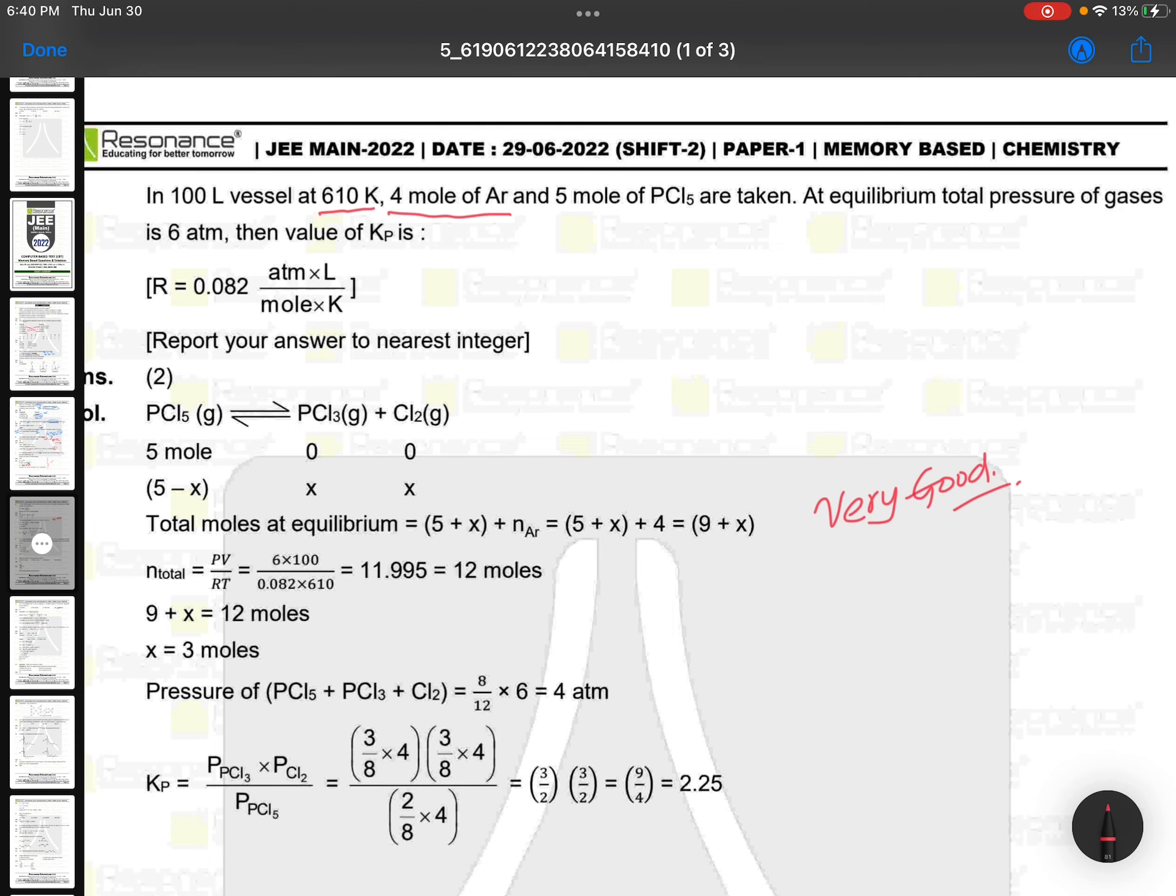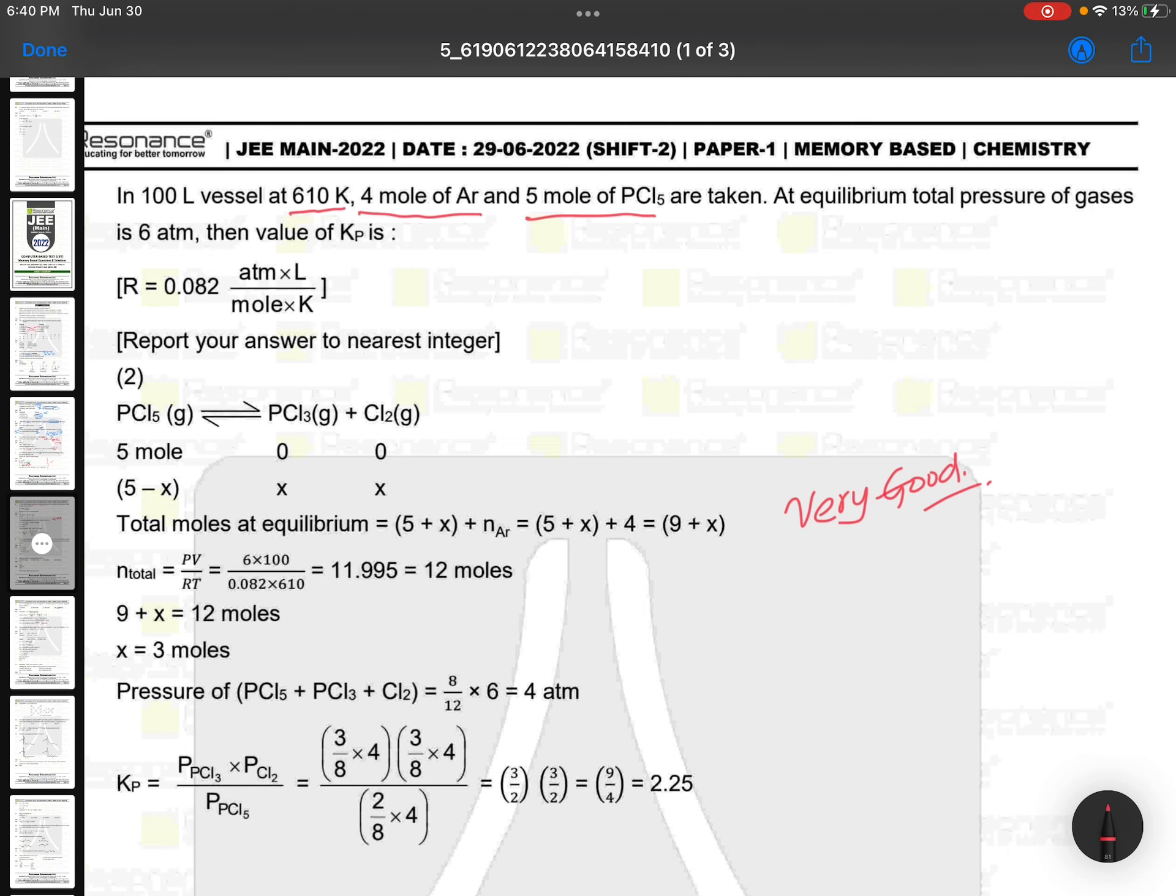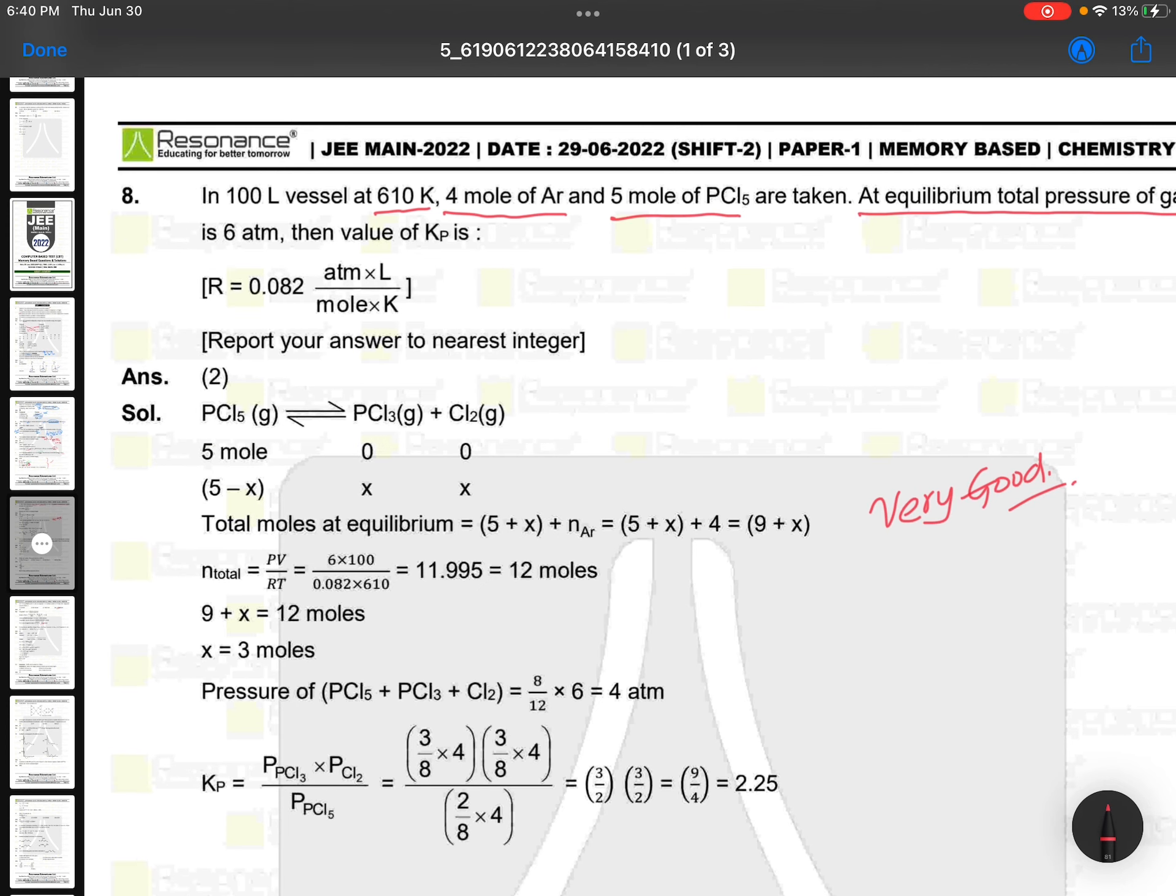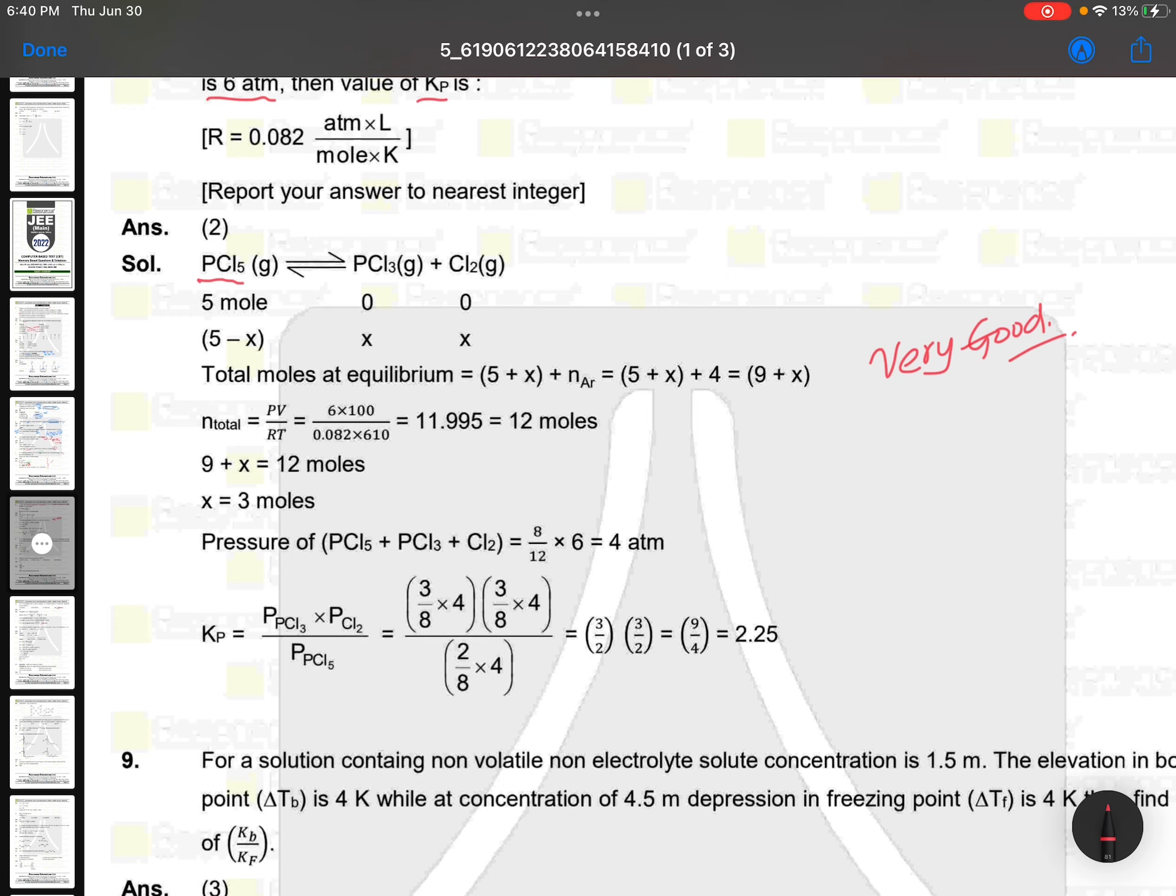At 610 Kelvin, 4 moles of argon and 5 moles of PCl5 are taken. At equilibrium total pressure of gases is 6 atm. Then value of Kp. So many things are here to check. PCl5 gives PCl3 + Cl2. 5 moles initially. If you are not good at equilibrium, leave this question because this has a lot of interesting points. At equilibrium: 5-x, and x, x. So total moles at equilibrium are 5+x.